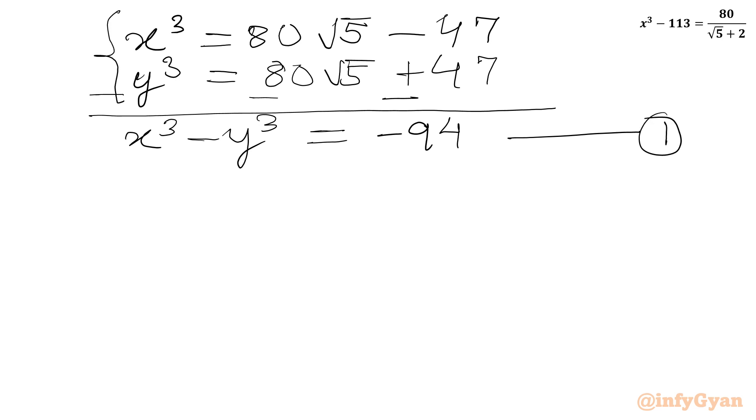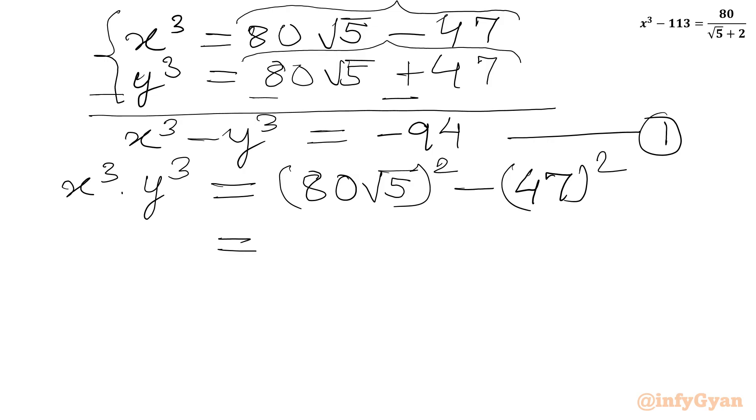Now I will consider product of these two. So x cube times y cube will be equal to 80 square root 5 minus 47 times 80 square root 5 plus 47. Let us apply difference of two squares identity. So 80 root 5 whole square minus 47 whole square. So 80 square is 6400 times 5 we will get 32,000 here. 47 square is 2209.